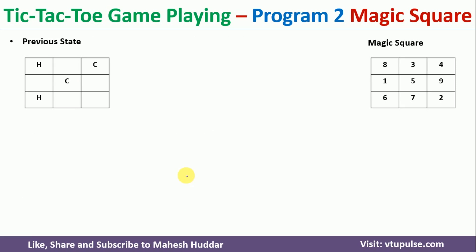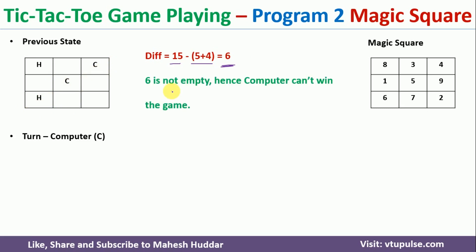Starting from this state, the computer checks: 15 minus (5 plus 4) equals 6. Since 6 is positive and less than 9, there is a possibility the computer can win if position 6 is empty. But position 6 is not empty here, so the computer cannot win. It then checks whether the human can win: 15 minus (8 plus 6) equals 1. Since position 1 is empty, the human can win, so the computer blocks by placing its move at position 1.